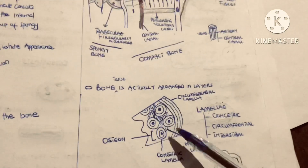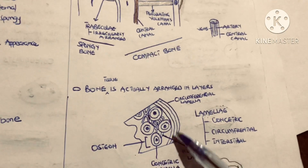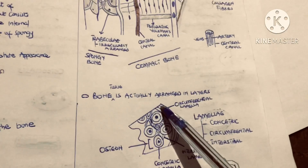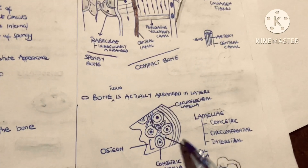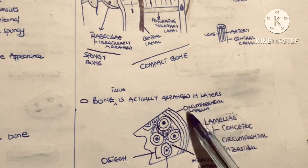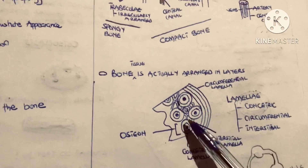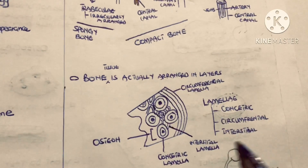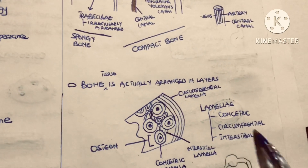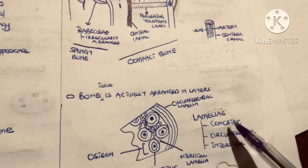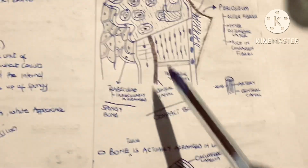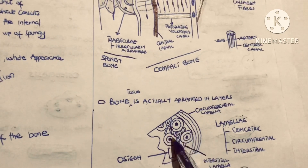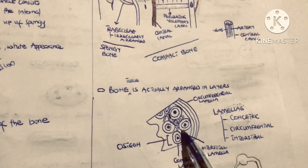We also have layers that line the circumference of the bone — because they line the circumference, we call them the circumferential lamellae. Between the concentric lamellae we have layers called the interstitial lamellae. So we have three types of lamellae: concentric lamellae, circumferential lamellae, and interstitial lamellae, which sit between the concentric lamellae.